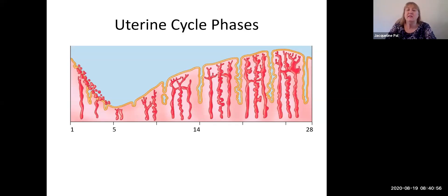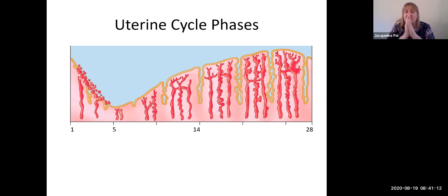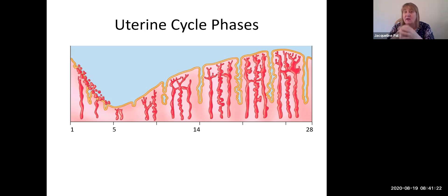Welcome back. In this video we're going to learn about the uterine cycle. So far you've learned about the ovarian cycle, where days 1 through 14 are the follicular phase, where the follicles are kicking out lots of estrogen and enlarging. Day 14 was ovulation, and then until day 28 is the luteal phase, because the corpus luteum takes over and produces massive amounts of progesterone.